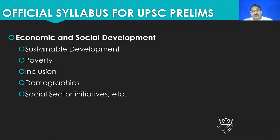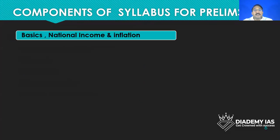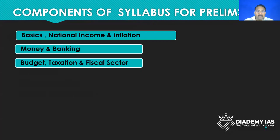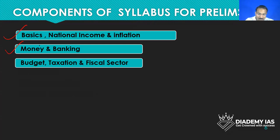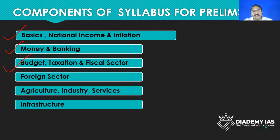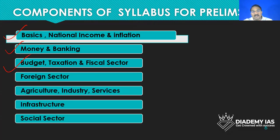The best approach will be to look at the previous year questions. If we see the previous year questions, these are some of the components: the basic national income and inflation, money and banking chapter, budget, taxation and fiscal sector, foreign sector, agriculture, industry, services, infrastructure, and social sector.